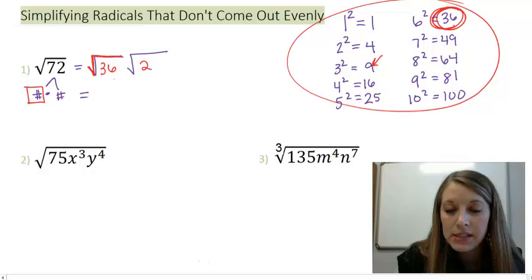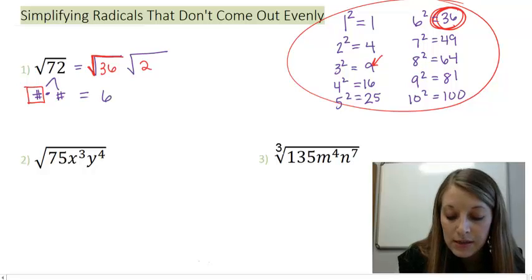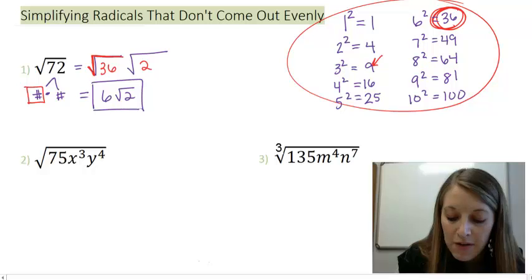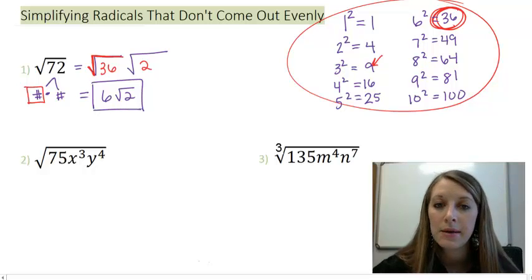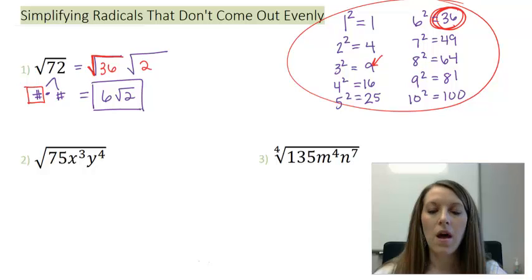The whole reason that I want this to be a square in the first place is because I now want to take the square root of it. The square root of 36 gives me 6, and I have my leftovers of 2. That is my final answer in this example. Square root of 72 simplifies to be 6 times square root of 2. Because of time, I'm going to stop this video here. But in the next video, I'm going to work those last two examples that you see at the bottom of your screen.